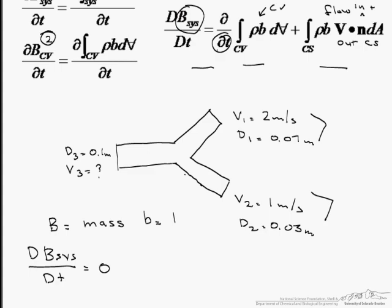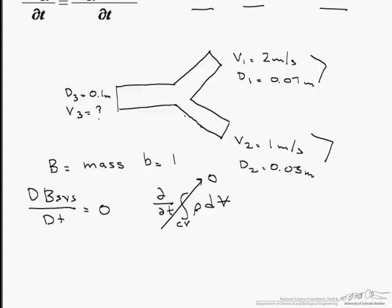Then when you look at the first term of the right hand side what you find is that this mass does not change in the control volume with respect to time so that equals 0. So what we are left with is that 0 equals,